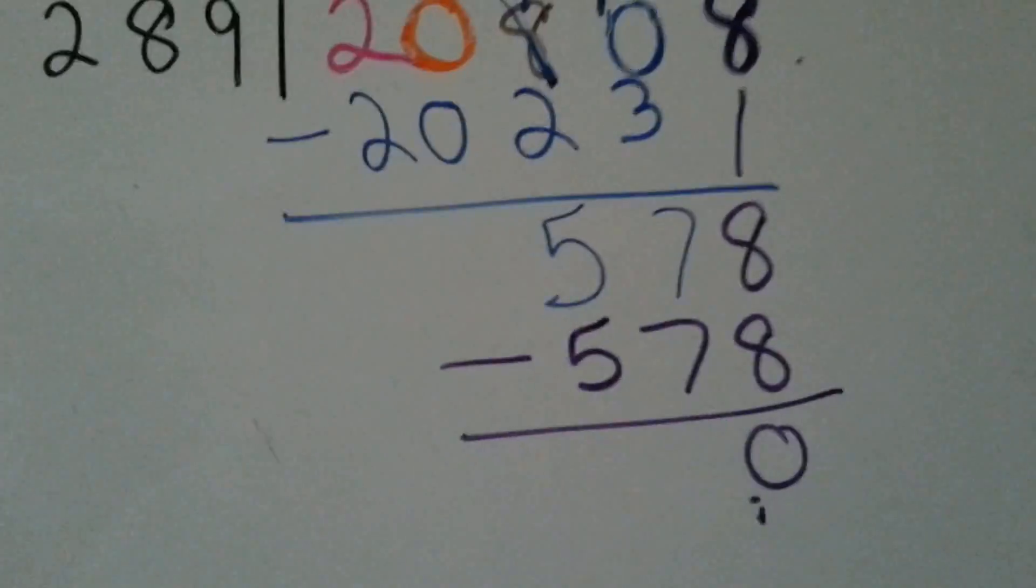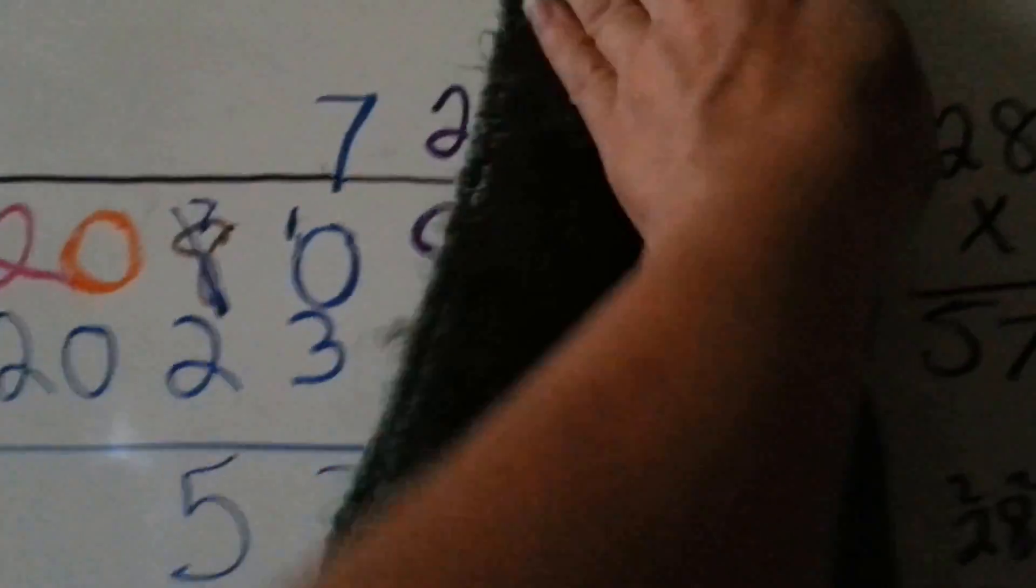You can write the remainder as this number would be the numerator and that number would be the denominator. That's just for future reference. But right now, we have a 0 remainder.